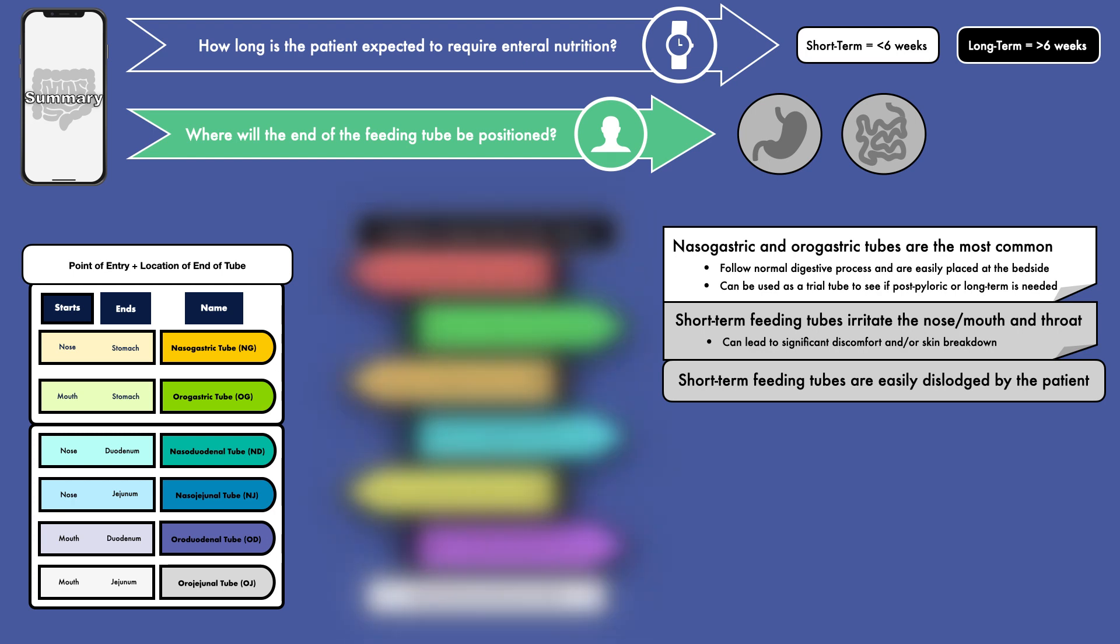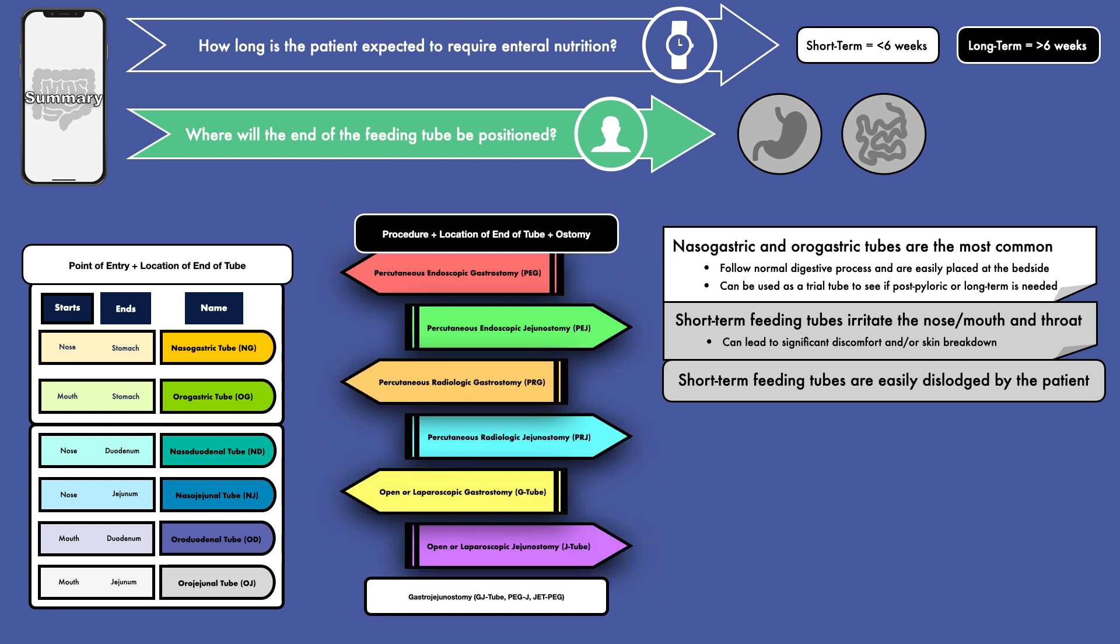The long-term feeding tubes are often named by combining the procedure, the location of the end of the tube, and the word ostomy. Examples include the percutaneous endoscopic gastrostomy, or PEG, and the percutaneous radiologic jejunostomy, or PRJ. Another relevant long-term feeding tube is the gastrojejunostomy, or GJ tube.